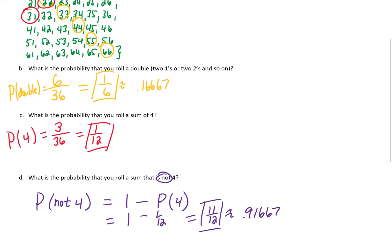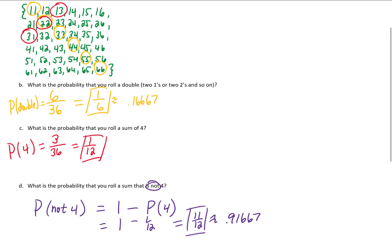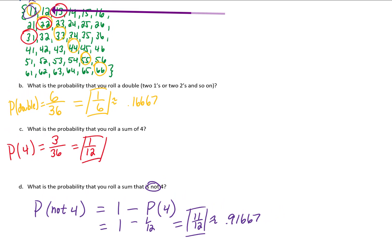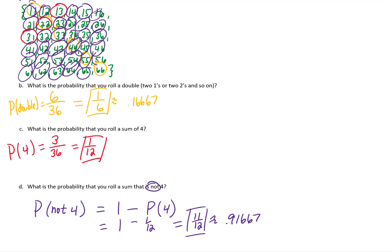But there was another way that you could do this problem. You could go up to your sample space and count up all of the ways that you could roll something that doesn't give you a sum of four. So if you count all of those up, you would get 33 total out of 36. And that is a fraction that ends up reducing to 11 twelfths anyway. So sometimes using the formula can save you a little bit of time.